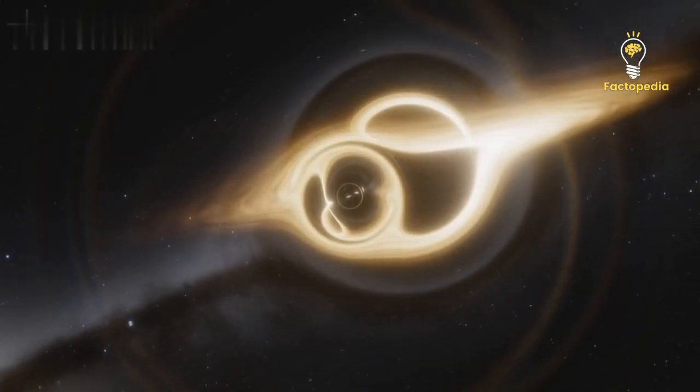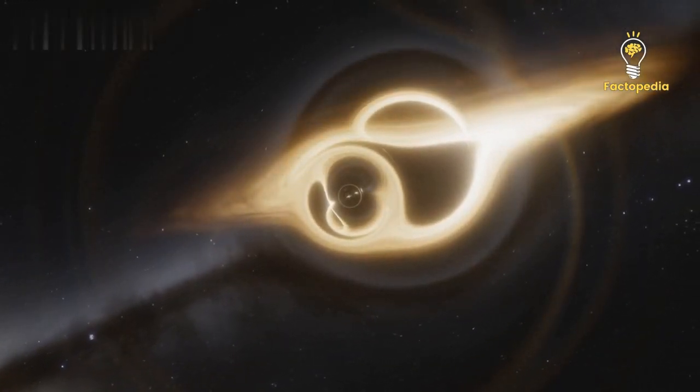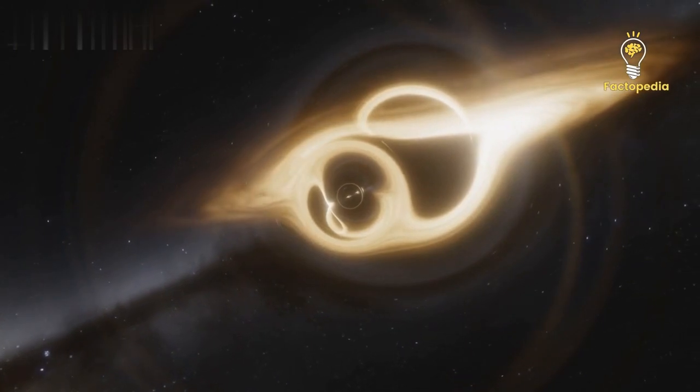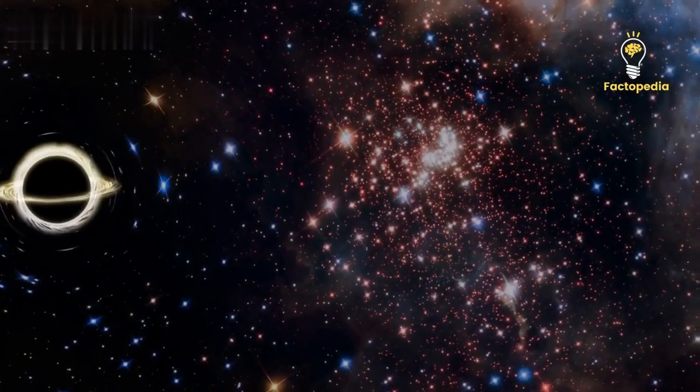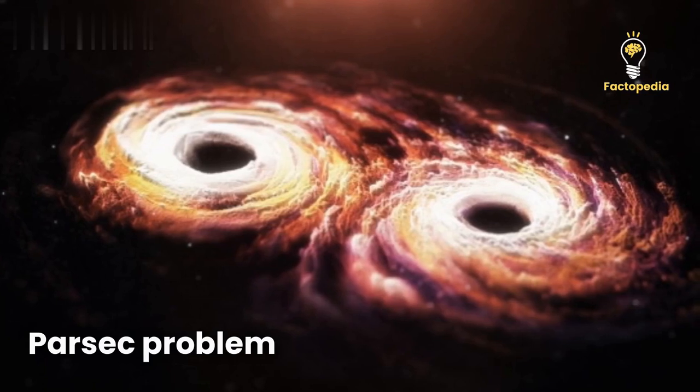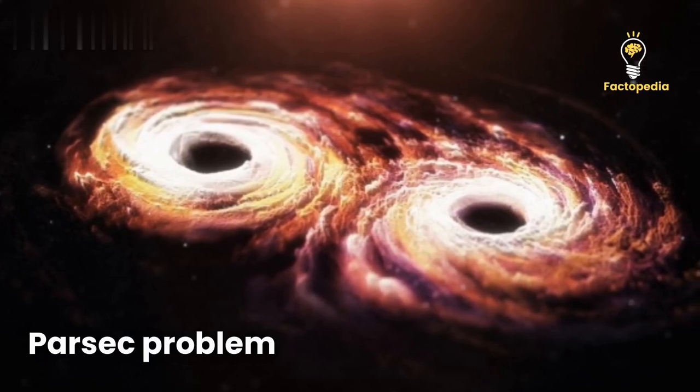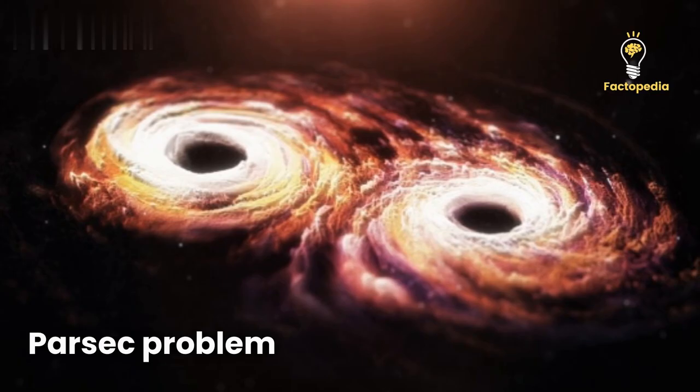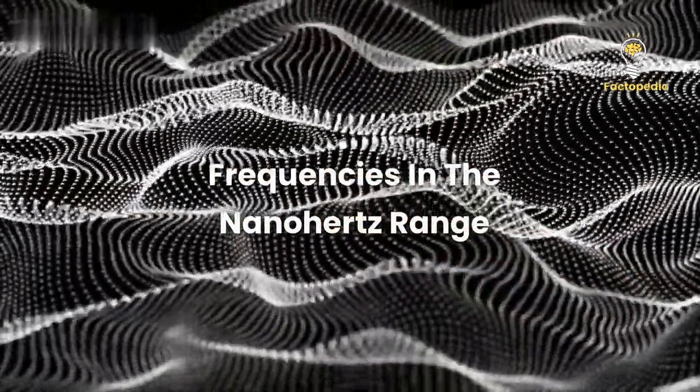This gravitational wave background could be the result of colossal collisions between supermassive black holes. And here's the thing, we used to think this was impossible. There was this pesky problem called the final parsec problem that made it seem like these black hole mergers couldn't happen. But guess what? They can.